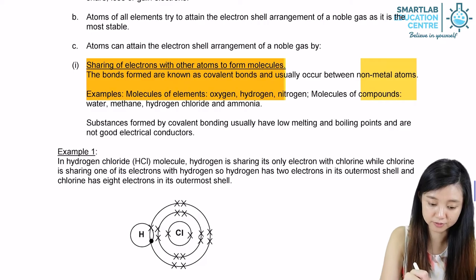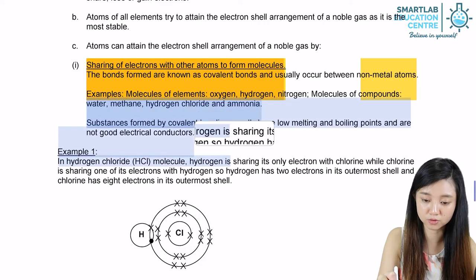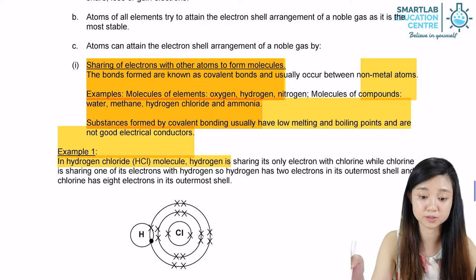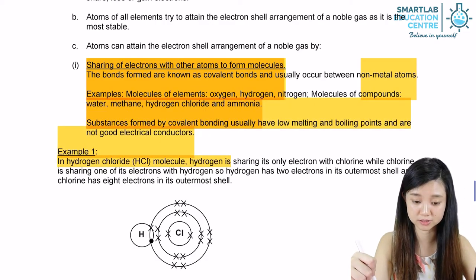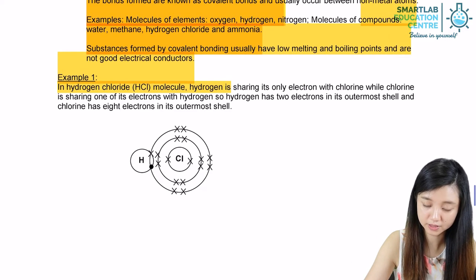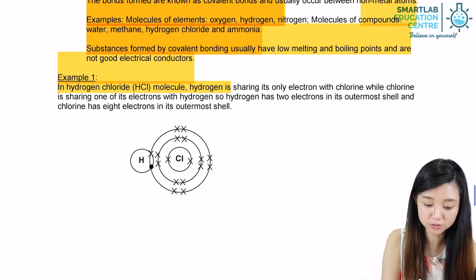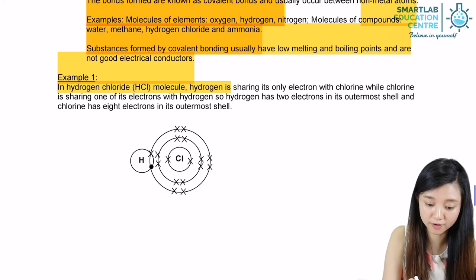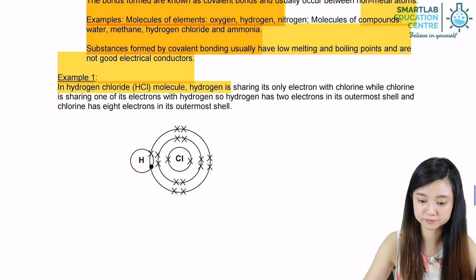For substances that are formed by covalent bonds, they usually have low melting and boiling points, and are not good electrical conductors. If we look at the example given below, we have hydrogen chloride, which is bonded by covalent bonding.